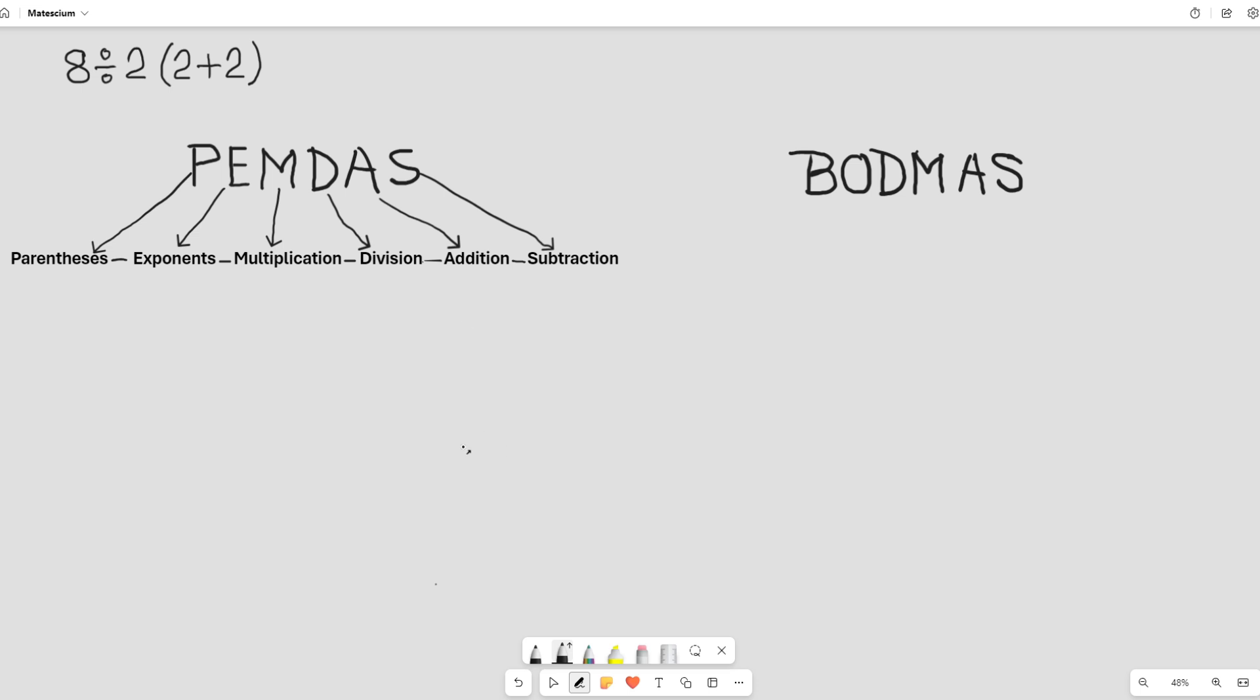Let's solve this viral math equation as per PEMDAS acronyms. 8 divided by 2, first bracket, 2 plus 2. First, we have to work on parenthesis according to PEMDAS. Therefore, the next is 8 divided by 2 times 4.